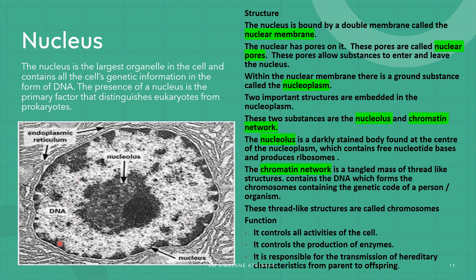The chromatin network is a tangled mass of thread-like structures that contain the DNA which forms the chromosomes carrying the genetic code of an organism. These thread-like structures are called chromosomes. The function of the nucleus is to control all activities of the cell — it is essentially the brain of the cell. It controls the production of enzymes and is responsible for the transmission of hereditary characteristics from parent to offspring, since it contains DNA.